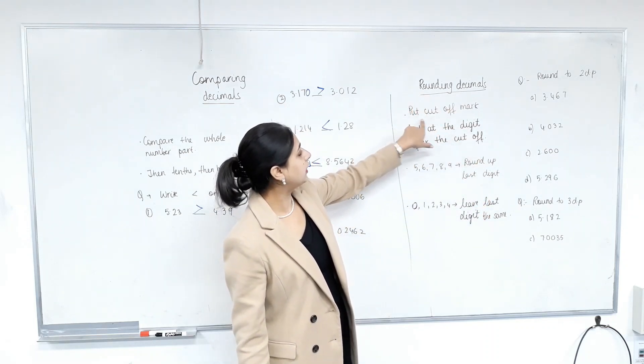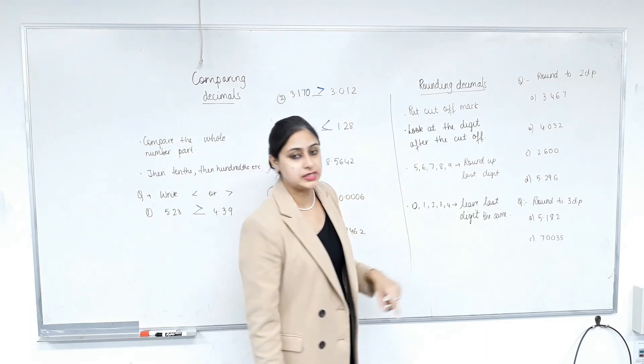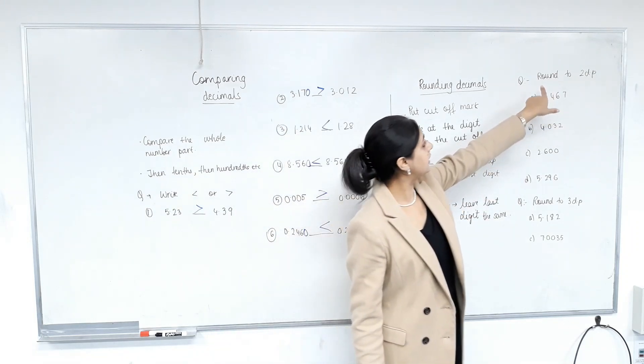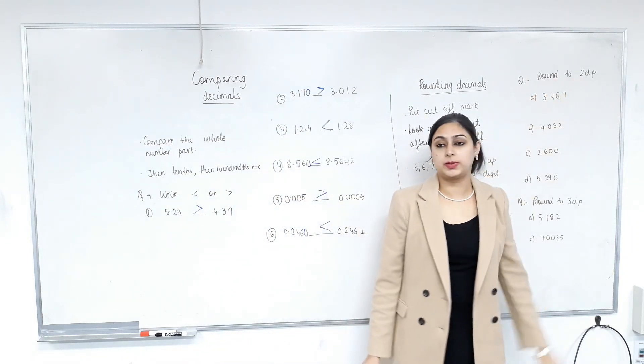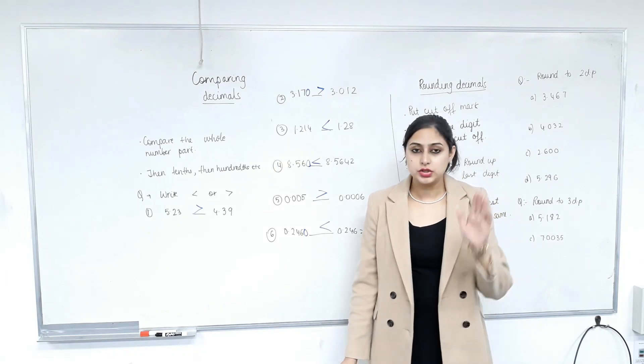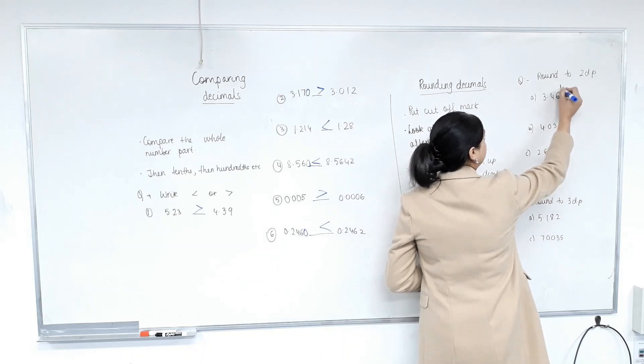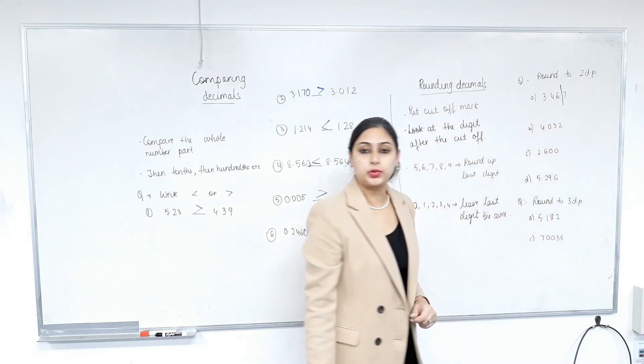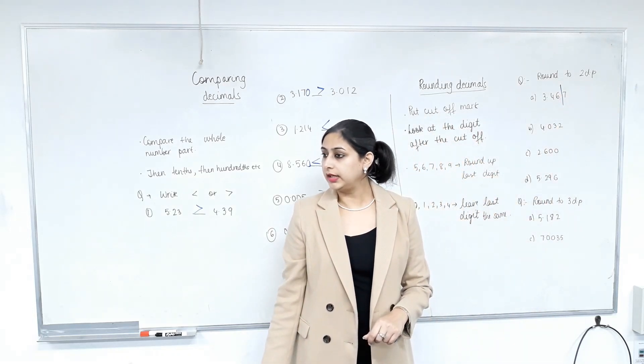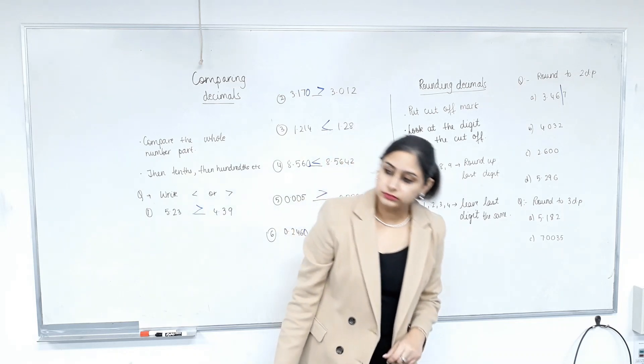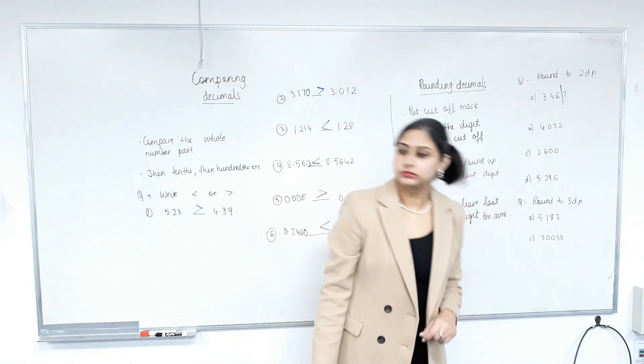So rounding decimals, put the cutoff mark. What that means is, read the question. It says round to two decimal places. So what's your cutoff mark? Two decimal places. That means after the decimal, you can only have two. You can't have the third digit. Put the cutoff mark. Clear?